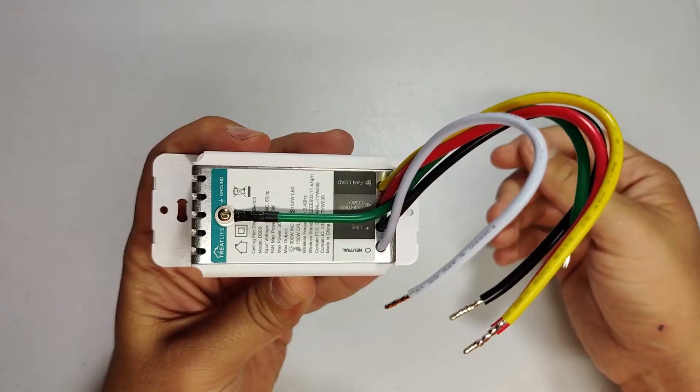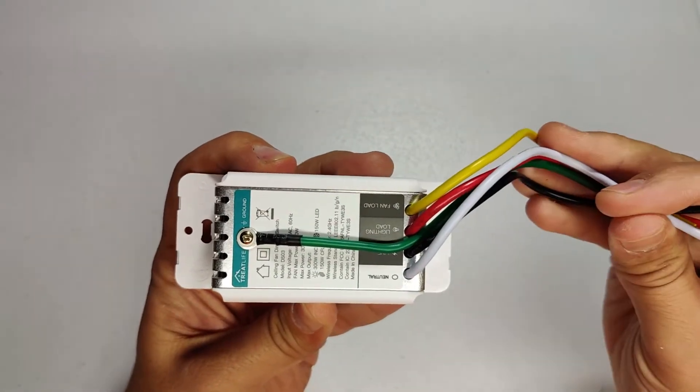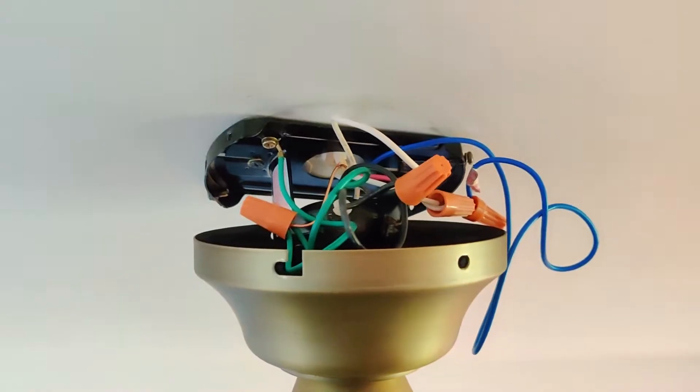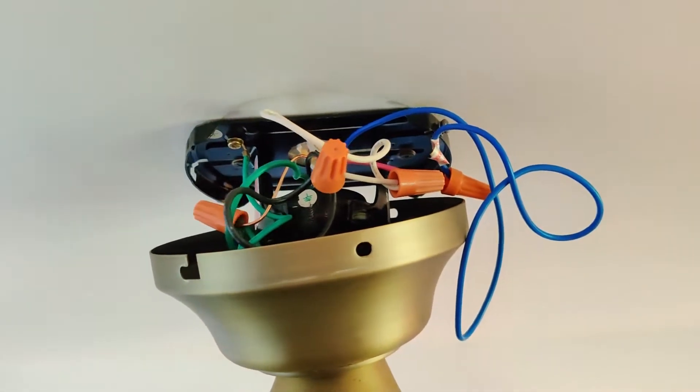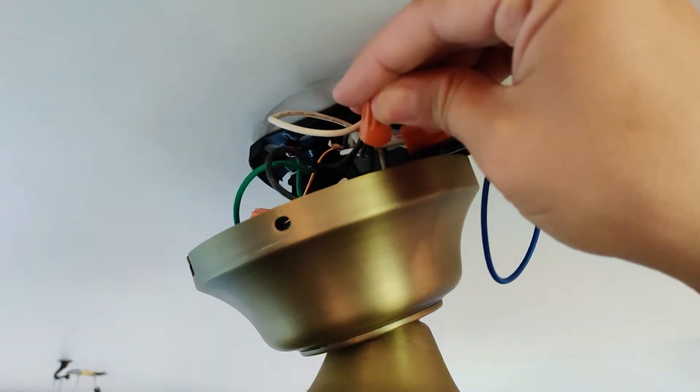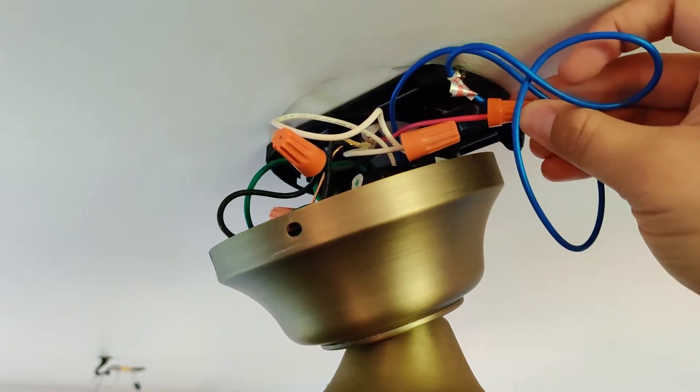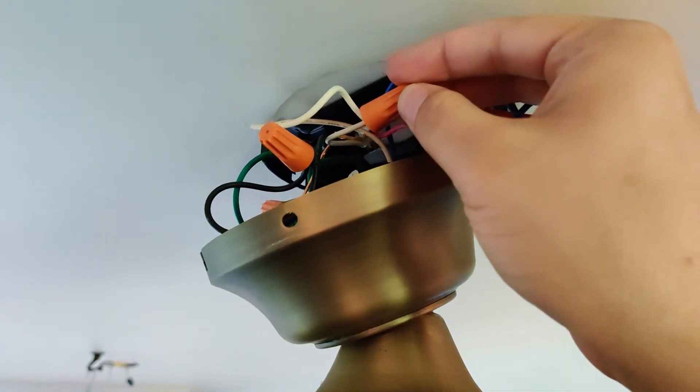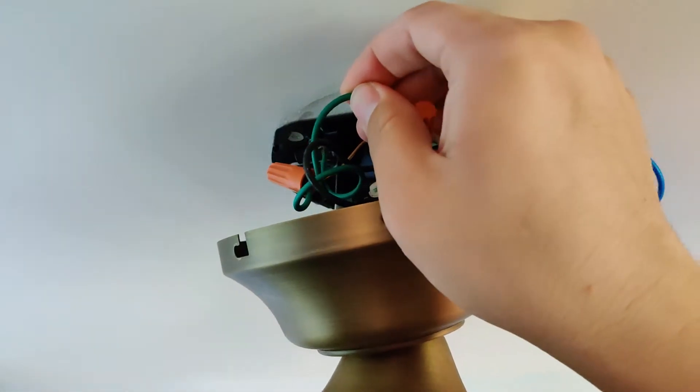Make sure you have a neutral in your box because this switch needs continuous power. Then in the base of your fan there typically is a black which is for the fan, a blue which is for the lights, a white which is for neutral and then a green which is for ground.